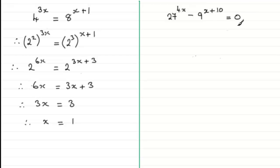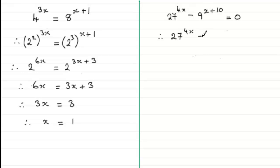We need to reduce it to two terms by adding 9 to the power x plus 10 to both sides. If we do that, we then end up with 27 to the power 4x equals 9 to the power x plus 10.